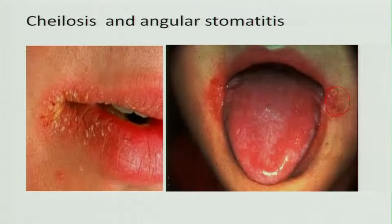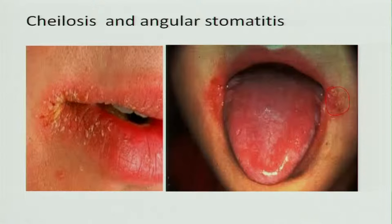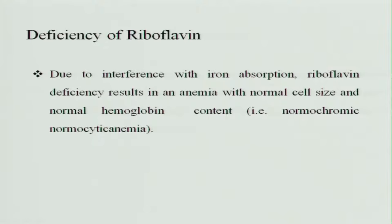You can see the corners of the lips being cracked and becoming ulcerative, which is called angular stomatitis. Deficiency of riboflavin also interferes with iron absorption, resulting in anemia. These cells, when riboflavin is deficient, look normal in cell size and normal hemoglobin, but they are normocytic — meaning the volume of the RBC is decreased.